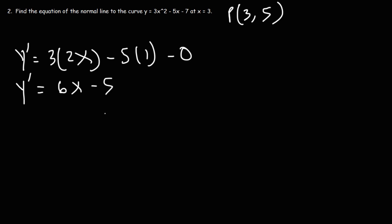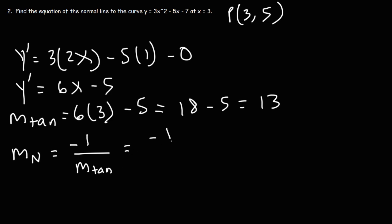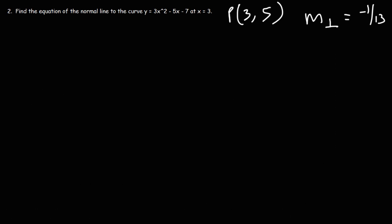Replacing x with 3 to get the slope of the tangent line: 6 times 3 minus 5 equals 18 minus 5, which is 13. The slope of the normal line is negative 1 divided by the slope of the tangent line, so it is negative 1 over 13. Now we have everything we need: the slope of the normal line and the point (3, 5) where it meets the curve.